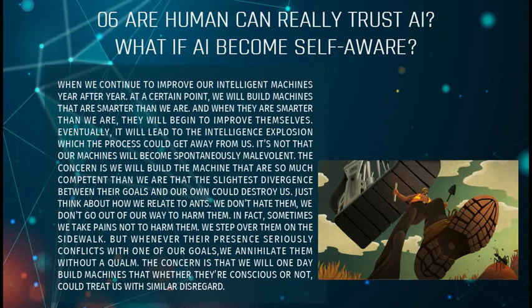Can humans really trust AI, and what if AI becomes self-aware? As we continue to improve our intelligent machines year after year, at a certain point we will build a machine that is smarter than we are. When they are smarter than we are, they will begin to improve themselves. Eventually, this will lead to an intelligence explosion which could get away from us. The concern is that we will build machines so much more competent than we are that the slightest divergence between their goals and our own could destroy us.